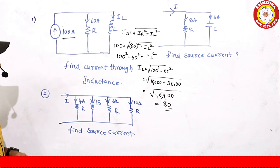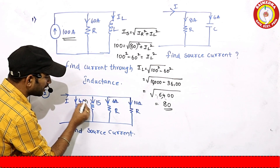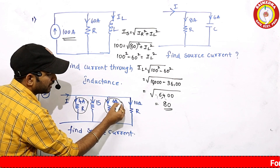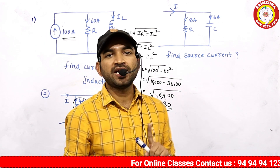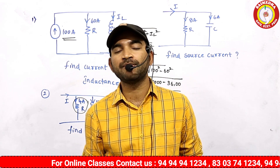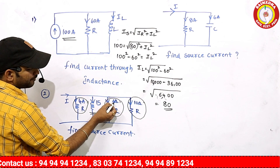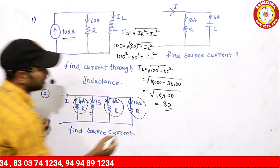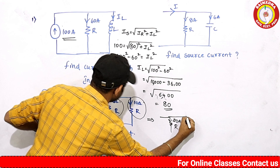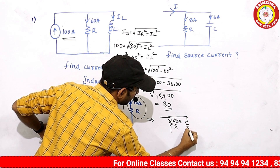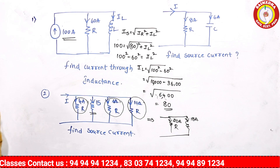Next, here we go to find the source current for another question. The load has resistive and inductive loads. For resistive elements, we have direct addition: 4A + 6A + 10A = 20A. So current through resistance is 20A, and current through inductance is 15A.